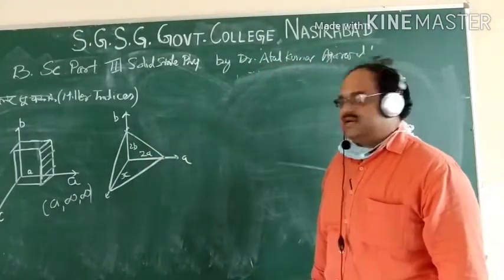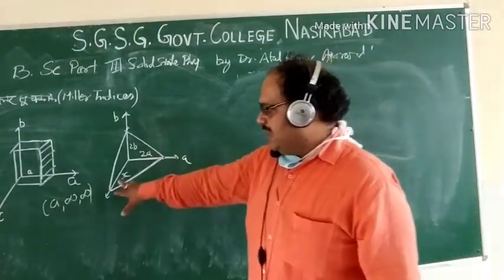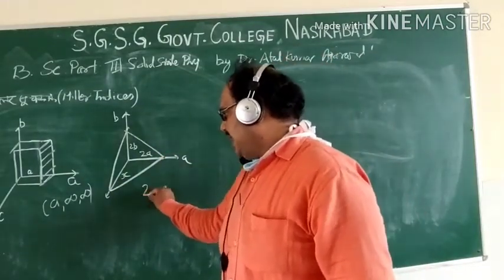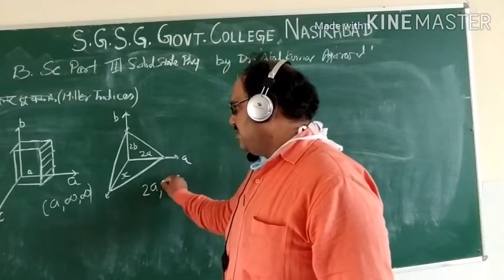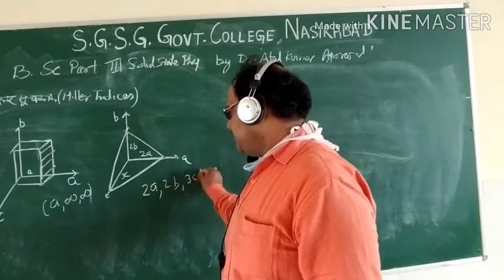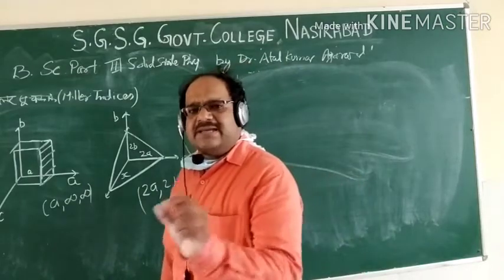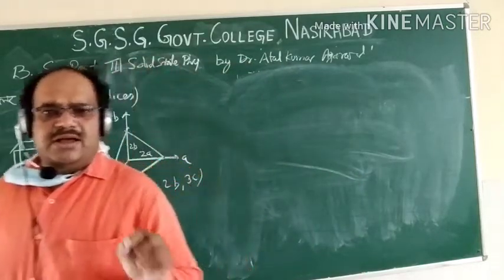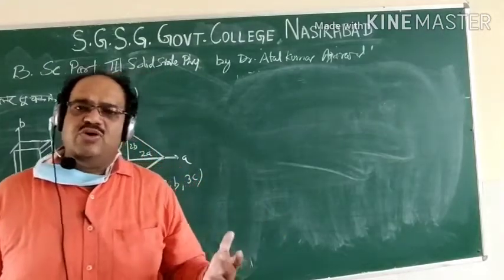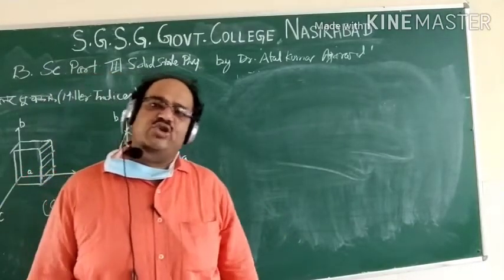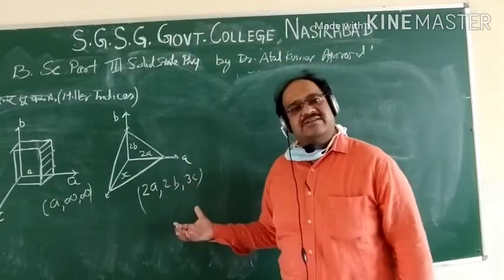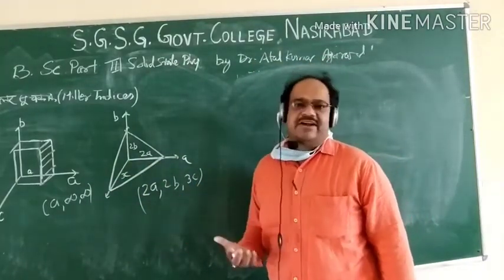Another crystal structure which is cutting these three axes in this way has coordinates of two times A, two times B, and three times C. Here A, B, C are fixed primitives. These primitive vectors can be equal or they can be different — in a cube they are equal. So this is our orientation; we are trying to find out the crystal.